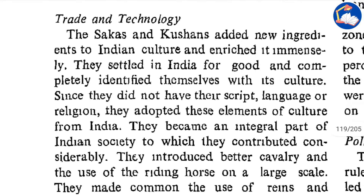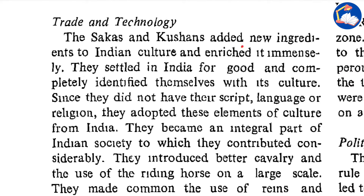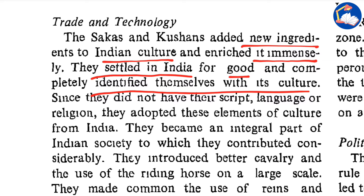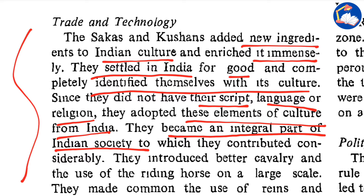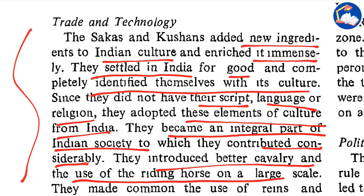In terms of trade and technology, the Sakas and Kushans added new ingredients to Indian culture and enriched it immensely. They settled in India for good and completely identified themselves with its culture. Since they did not have their own script, language or religion, they adopted these elements from India and became an integral part of Indian society. They introduced better cavalry and the use of riding horses on a large scale.